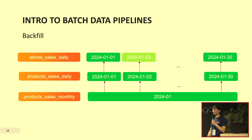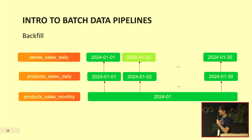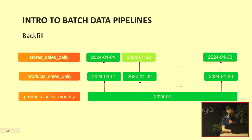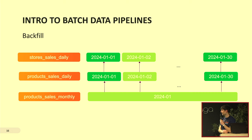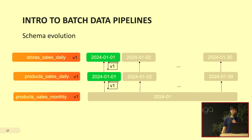A first kind of problem with data pipelines is backfill: you discover after the fact that you had wrong data to start with. What you need to do then is backtrack everything that was computed from this wrong data and redo the computation to fix it. In this case, I had to fix all my aggregates.